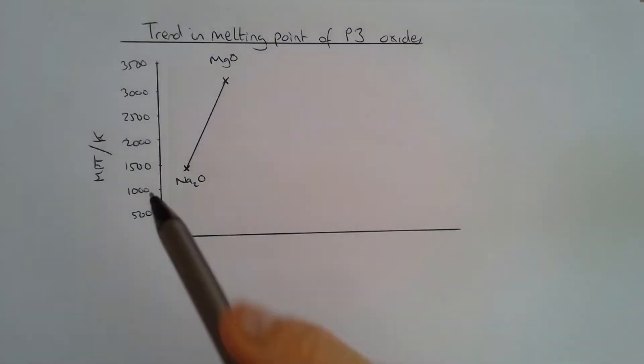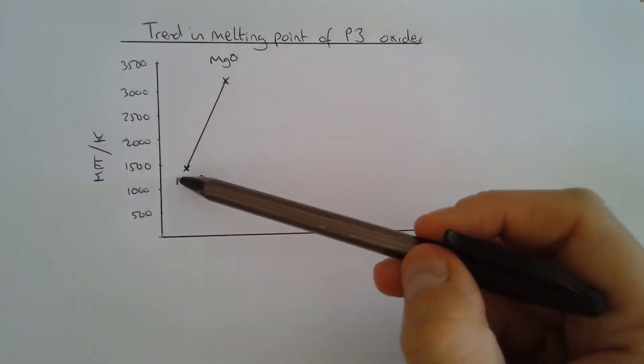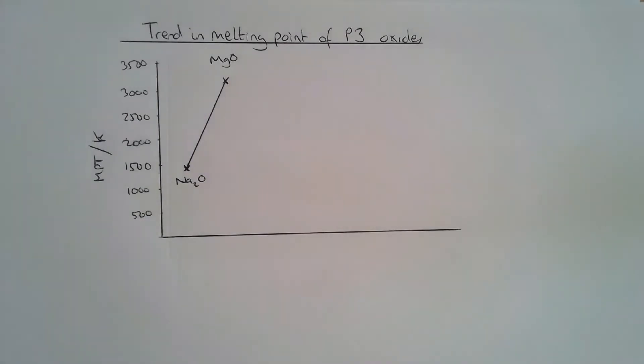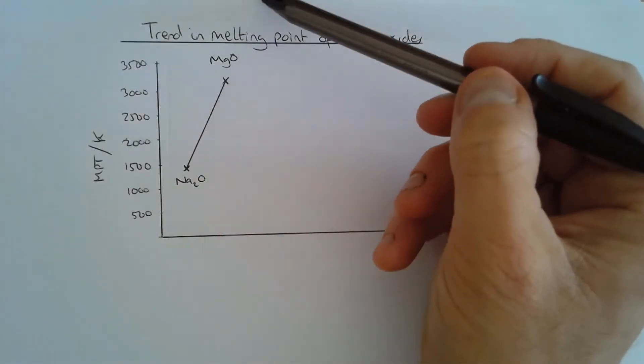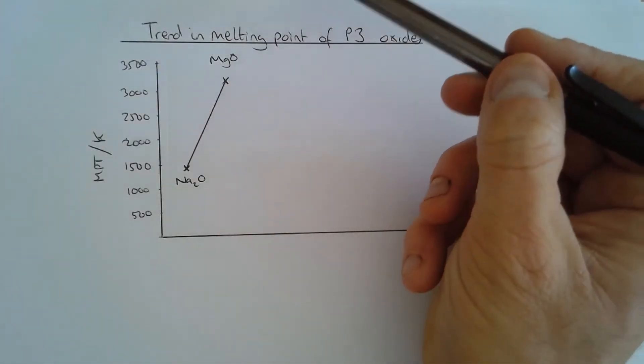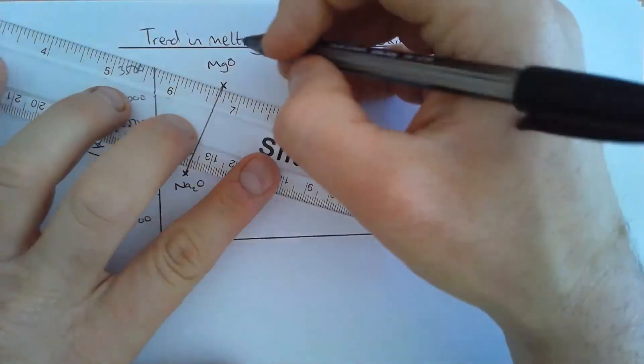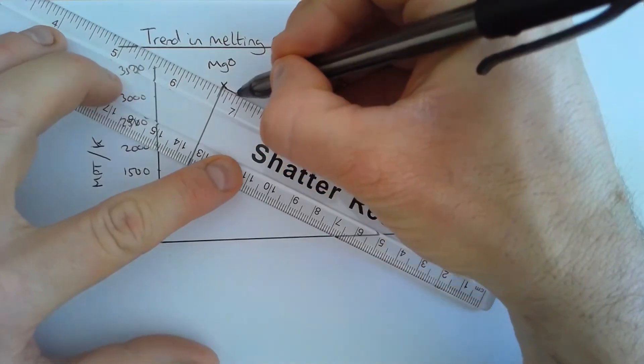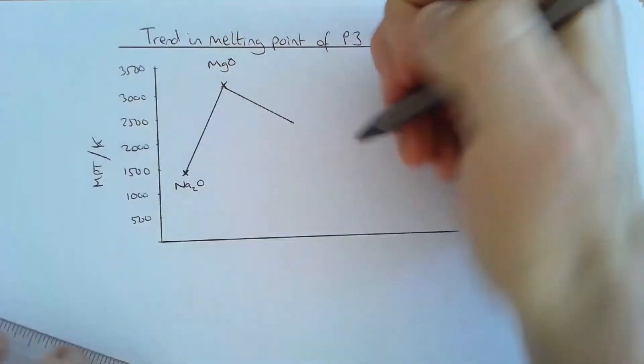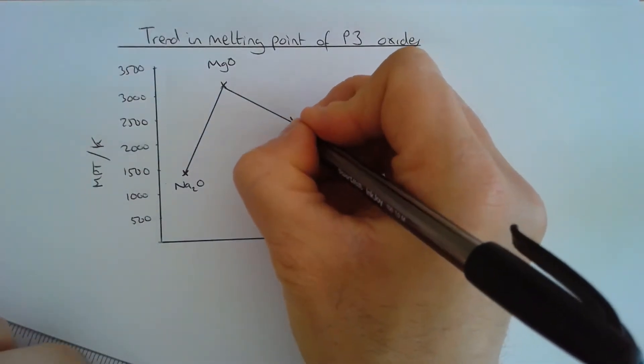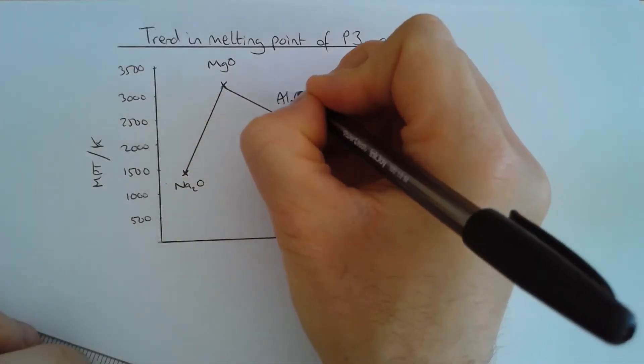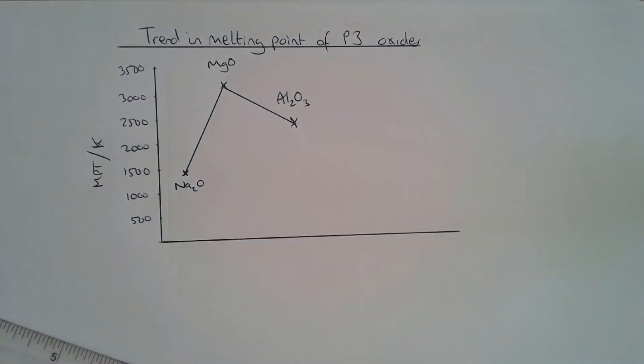We would expect using an understanding of the ionic bonding taking place between the ions in sodium oxide and magnesium oxide, that aluminium oxide would have an even higher melting point than magnesium oxide. It still has a very high melting point, but it's not as high as we would expect. We find it's a little bit below two and a half thousand Kelvin. So Al2O3 is our aluminium oxide there.